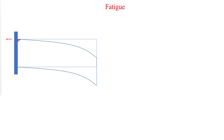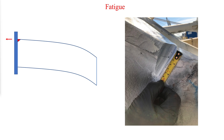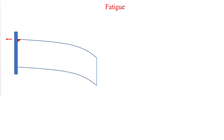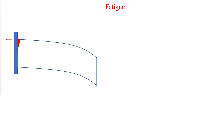Fatigue damage can be characterized as progressive crack growth due to fluctuating stress on the member. Fatigue cracks initiate at small defects or imperfections in the base material or weld metal, and it is one of the most common types of failure encountered in crane runway systems. The imperfections act as stress risers that magnify the applied elastic stresses into small regions of plastic stress. As load cycles are applied,